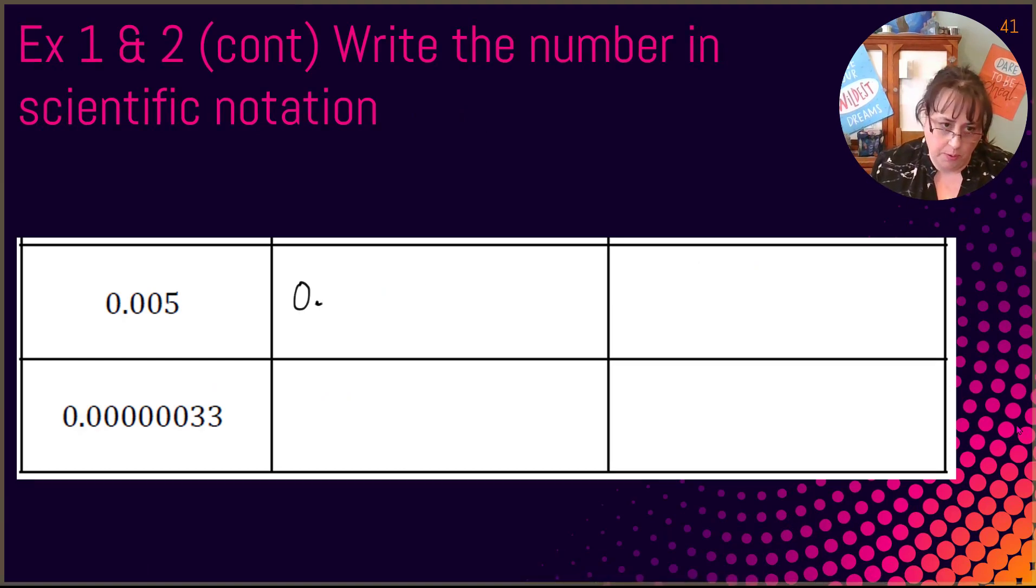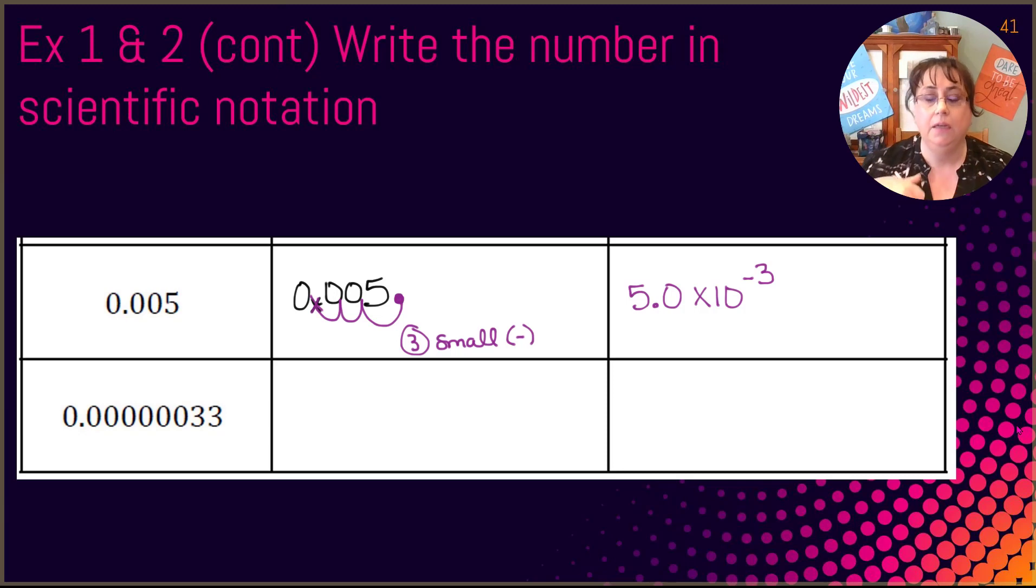Try these next two on your own and then come back to see how you did. All right. So you had 0.005. We need that to go in front of that 5. It started here. So that's 1, 2, 3, but it's a small number. So we're going to do a negative. So it's 5.0 times 10 to the negative 3. Remember it's always times 10 and then that number. And then this last one. 0 point - we'll use an x. And then it's 1, 2, 3, 4, 5, 6. And then a 3 and a 3. Our new decimal has to go between those two threes. And so it went 1, 2, 3, 4, 5, 6, 7. But it was smaller. So it'll be negative. So 3.3 times 10 to the negative 7.